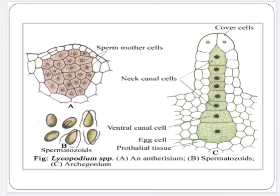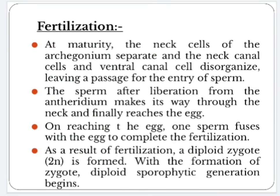Let us see the picture of antheridium, spermatozoids and development of archegonia. Fertilization: at maturity, the neck cells of the archegonium separate and the neck canal cell and ventral canal cell disintegrate, leaving a passage for the entry of spermatozoids. The spermatozoids, after liberation from the antheridium, make their way through the neck and finally reach the egg. One spermatozoid fuses with the egg to complete fertilization. As a result of fertilization, a diploid zygote is formed. With the formation of the zygote, the diploid sporophytic generation begins.